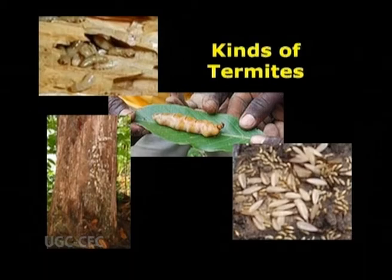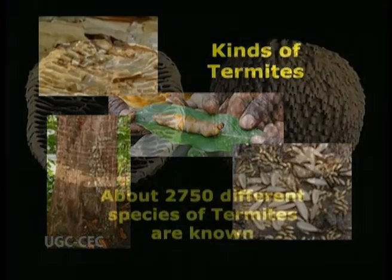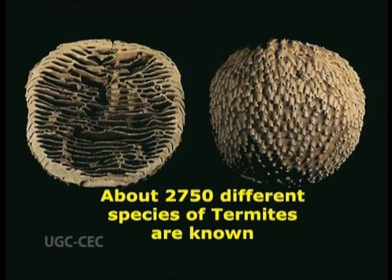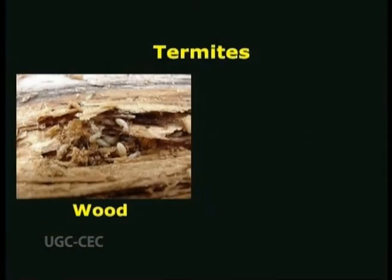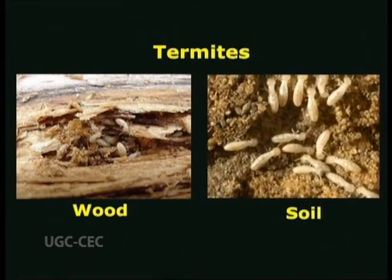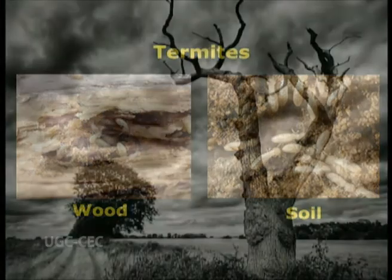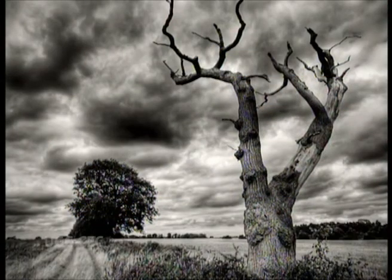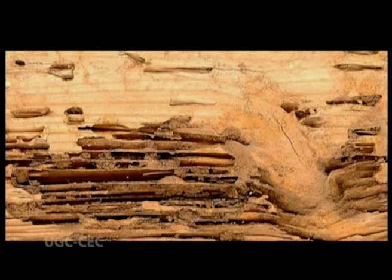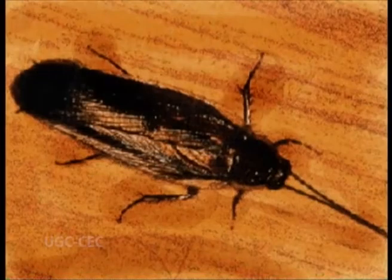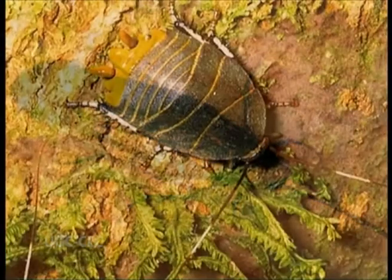The kinds of termites. About 2,750 different species of termites are known. These can be divided into two groups: those that live entirely within the wood, and the more advanced species that tunnel and nest in the soil. In terms of their ecology and behavior, the most primitive species are similar to certain wood-dwelling cockroaches with whom they may share a common ancestor.